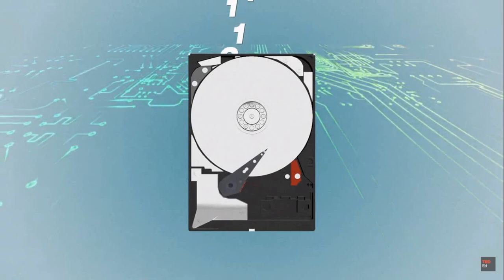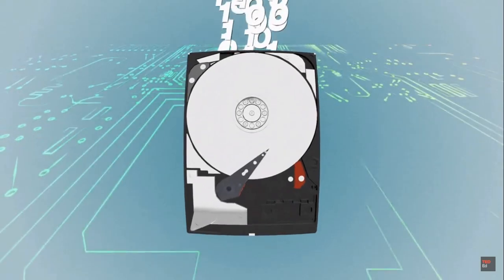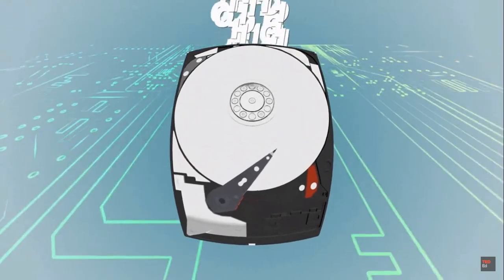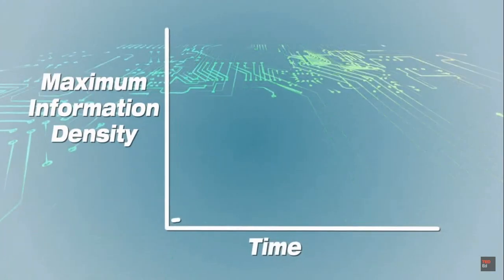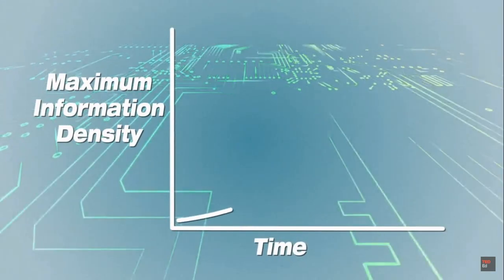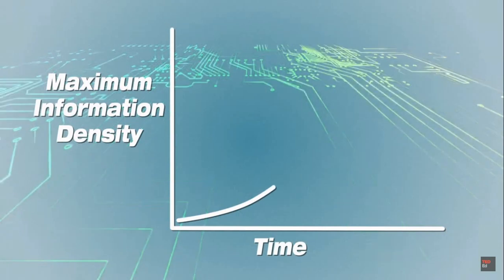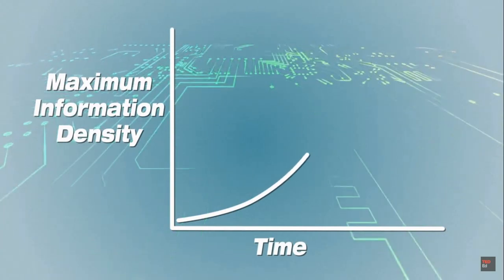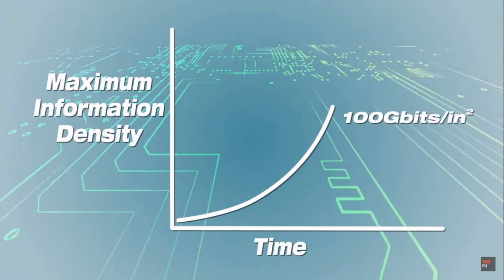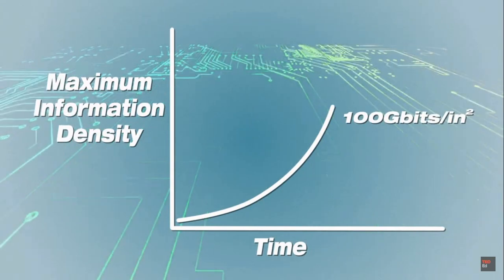For the past several decades, the exponential growth in computers' storage capacity and processing power has followed a pattern known as Moore's Law, which in 1975 predicted that information density would double every two years.